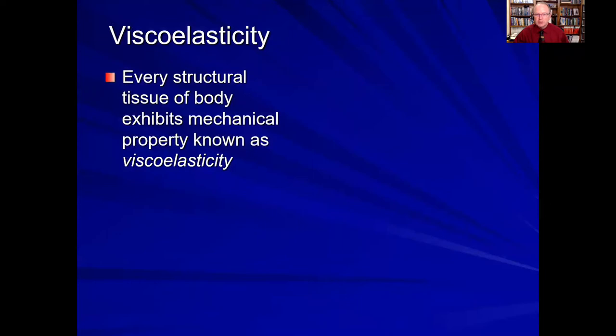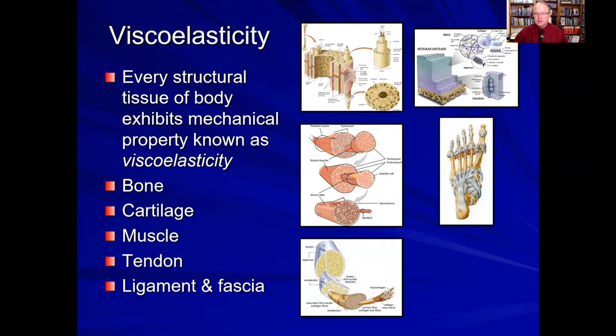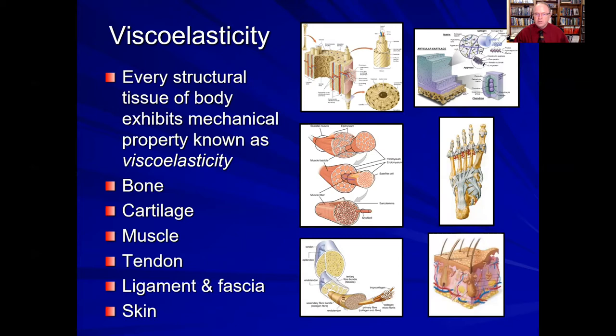So what is viscoelasticity? Every structural tissue of the body is viscoelastic, or has a property we call viscoelasticity. This includes bone, cartilage, muscle, tendon, ligament, and fascia, and also skin. So all these structural tissues in the foot and lower extremity that we deal with as clinicians on a daily basis in trying to prevent their injury and heal their injury are viscoelastic structures.